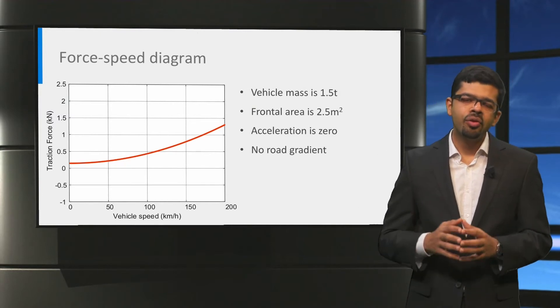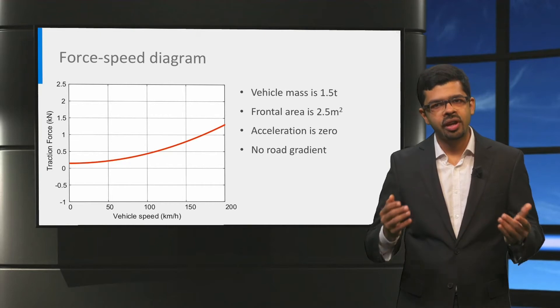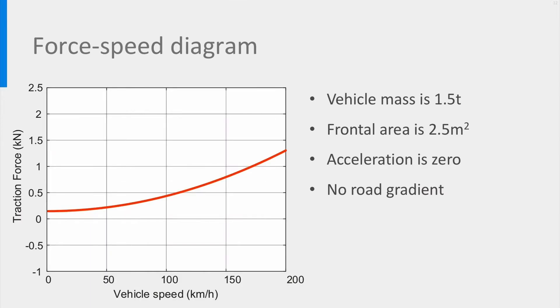Let us now look at a force-speed diagram of a vehicle with a mass of 1.5 ton, a frontal area of 2.5 m² and a speed range between 0 and 200 km per hour. From the formula for the traction force, we can calculate the force at each speed level for zero vehicle acceleration. Those points make a force-speed curve of this car.